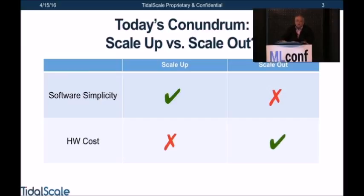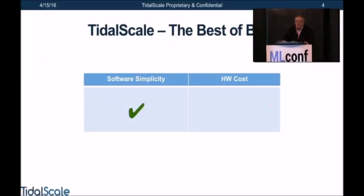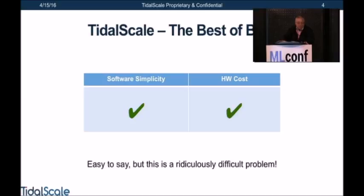If you're interested in hardware costs, what you really want to do is scale out. But you've got a problem. What you want is the simplicity of scale-up with the hardware cost advantages of scale-out. Can we do that? Yes, we can. What we do is aggregate a number of commodity servers and make it look like a supercomputer. It's easy to say but ridiculously hard to do, because we have to use a lot of processors and maintain a flat, coherent, shared memory space.